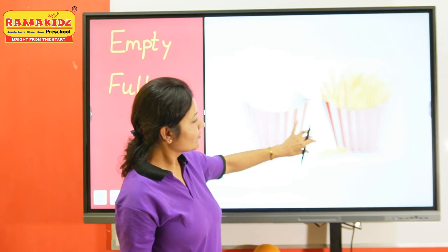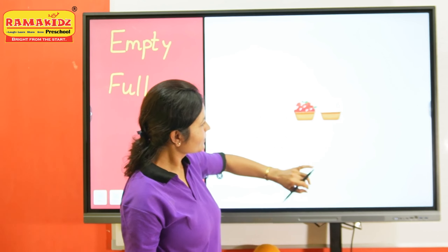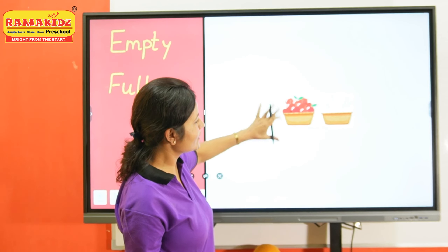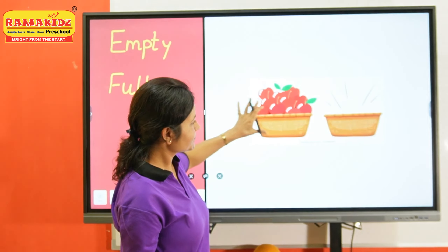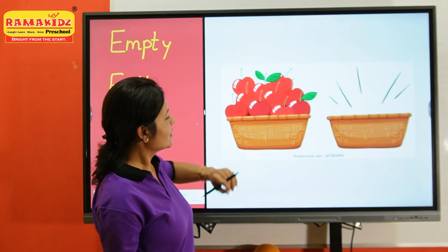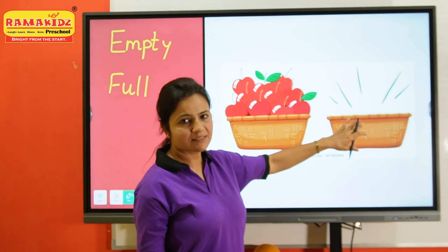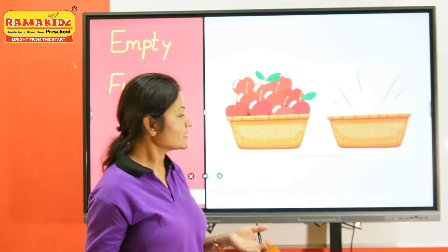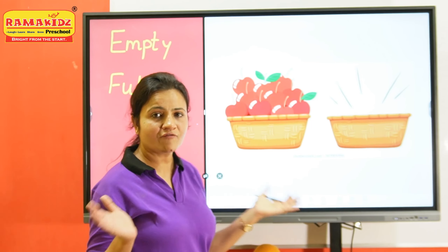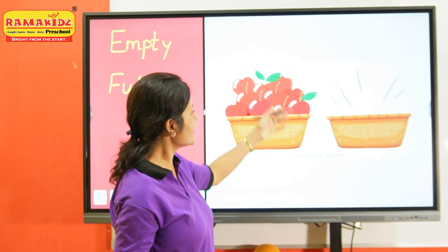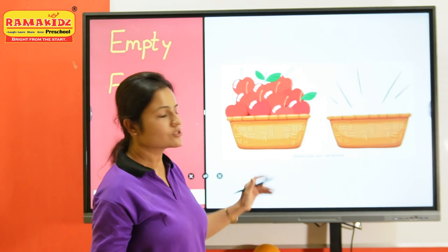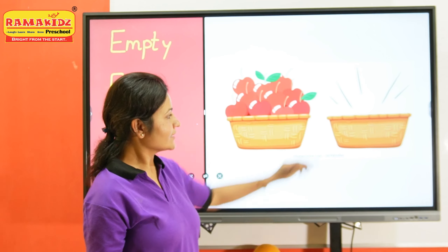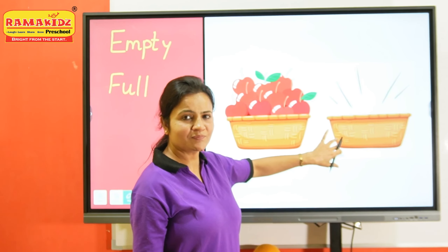Now take one more example. Now what is this? There are so many apples. In this bowl there is nothing, so this basket is empty. This basket is full of apples, there are so many apples, it is filled. So this basket is full and this basket is empty.